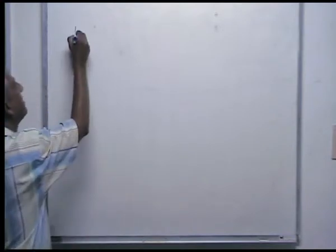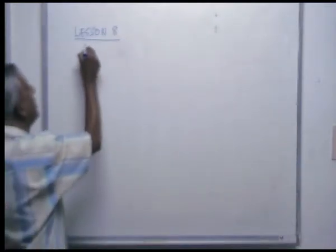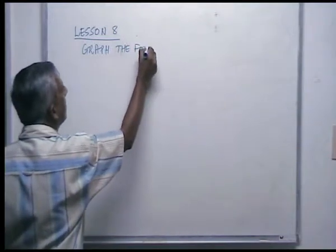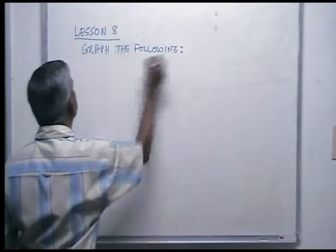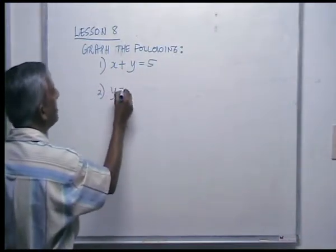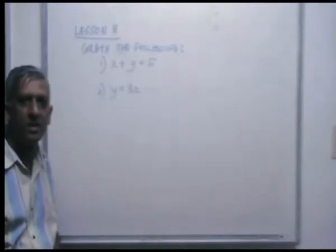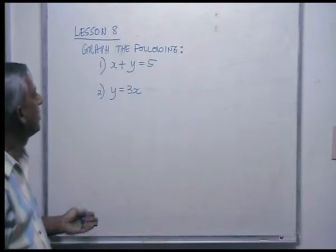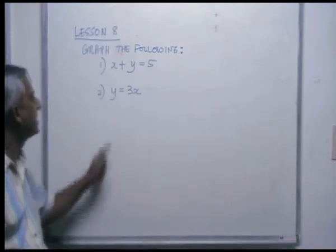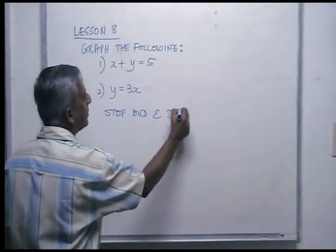Welcome back to Lesson 8. In this lesson, you do most of the work. I'm going to give you two examples: graph the following — number 1: x plus y equals 5, and number 2: y equals 3x. I'm not telling you which method to use — you decide. Think about it, try it, and then I'll mark it. Stop the DVD and do the exercise.